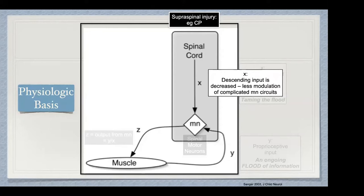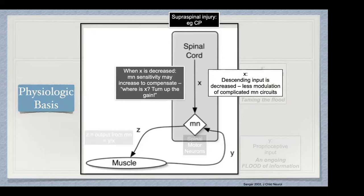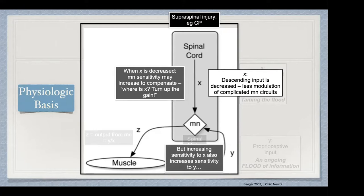Additionally, when this supraspinal modulation of the motor neuron circuits is decreased, those motor neurons start to look for — at least we think — that supraspinal input and they might even turn up the gain. So not only is Y unmodulated, the motor neurons start to turn up the gain to look for X, but increasing that sensitivity to X probably also increases the sensitivity to Y. Not only is it unmodulated, we're actually giving it a larger voice in those motor neurons' lives, so the motor neurons become more responsive to Y and the outflow, Z, increases.